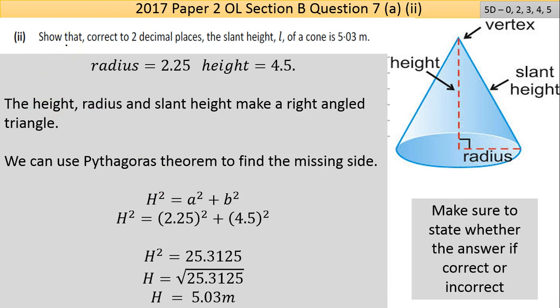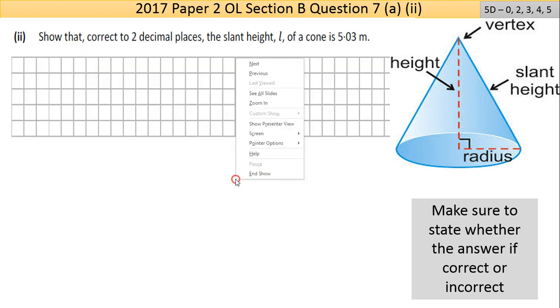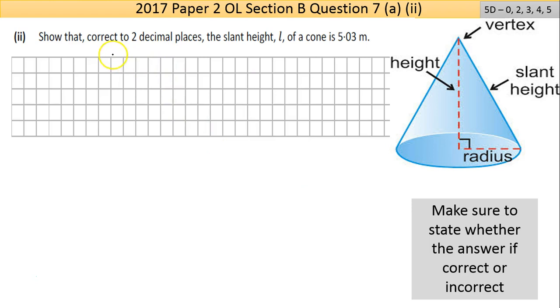Question 7a part 2 says show that, correct to two decimal places, the slant height L of a cone is 5.03 meters. You need to know the formula for slant height. I'm going to go to the answer here to remind myself what it is.